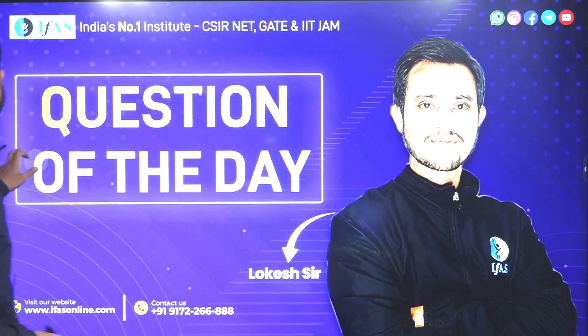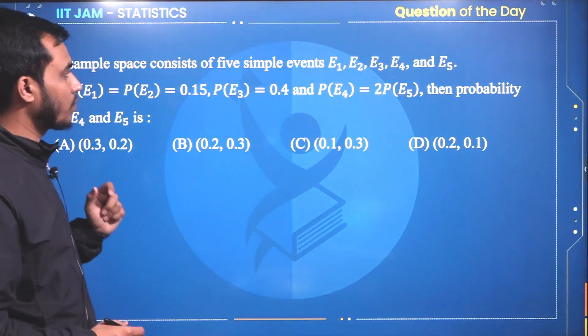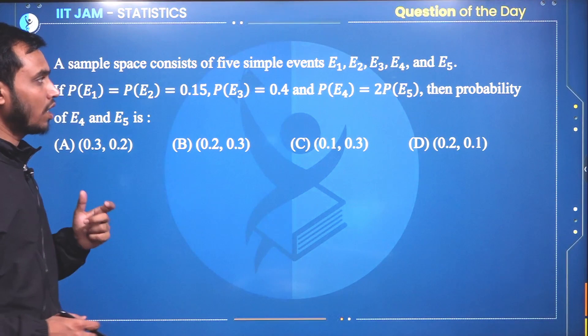Today's question is: a sample space consists of five simple events E1, E2, E3, E4, and E5.